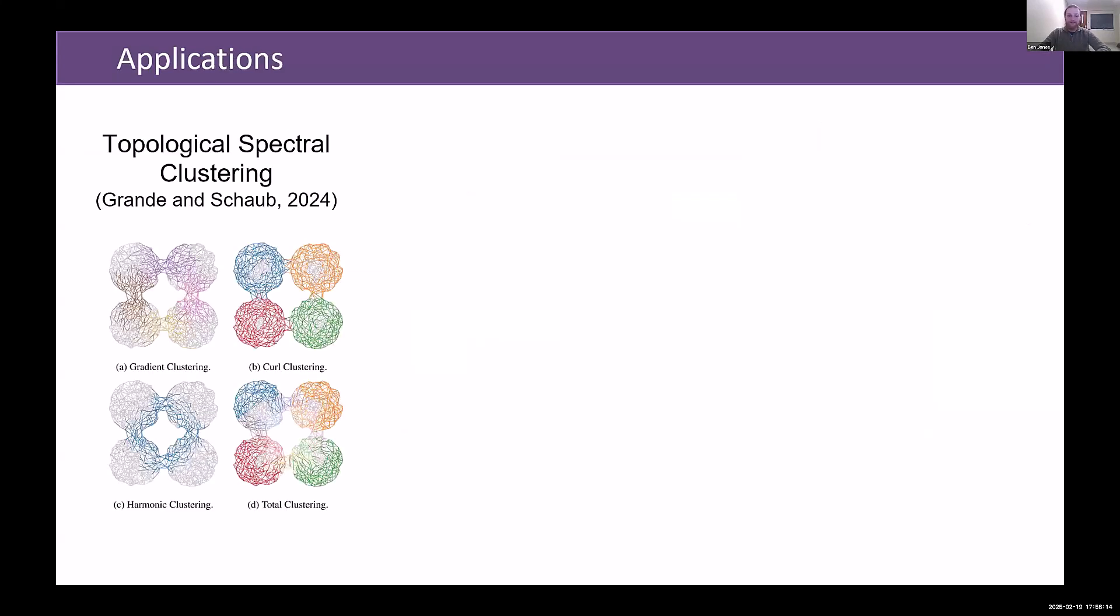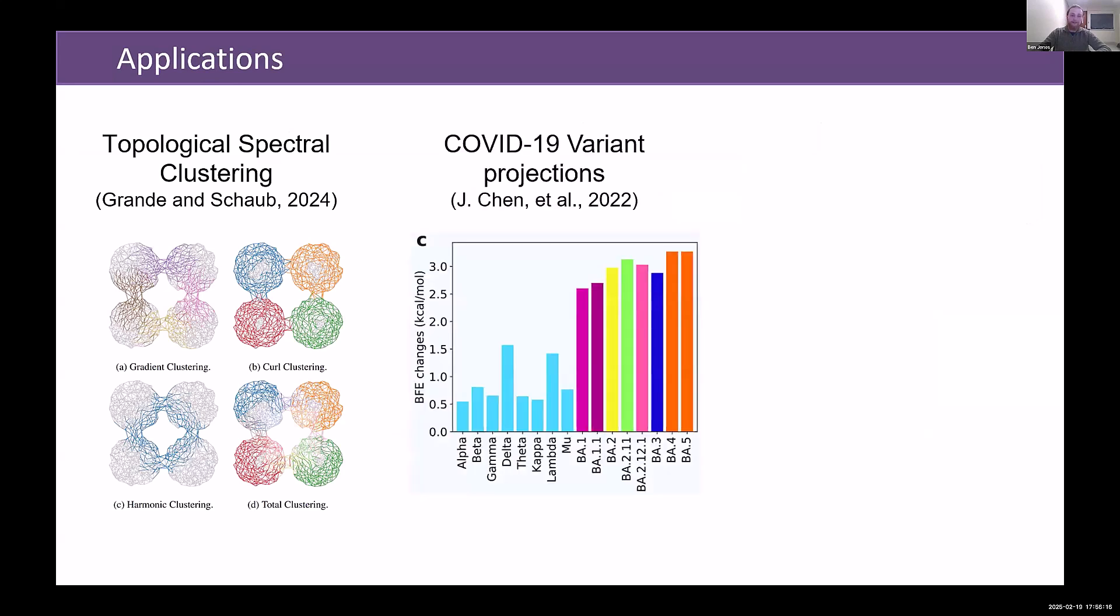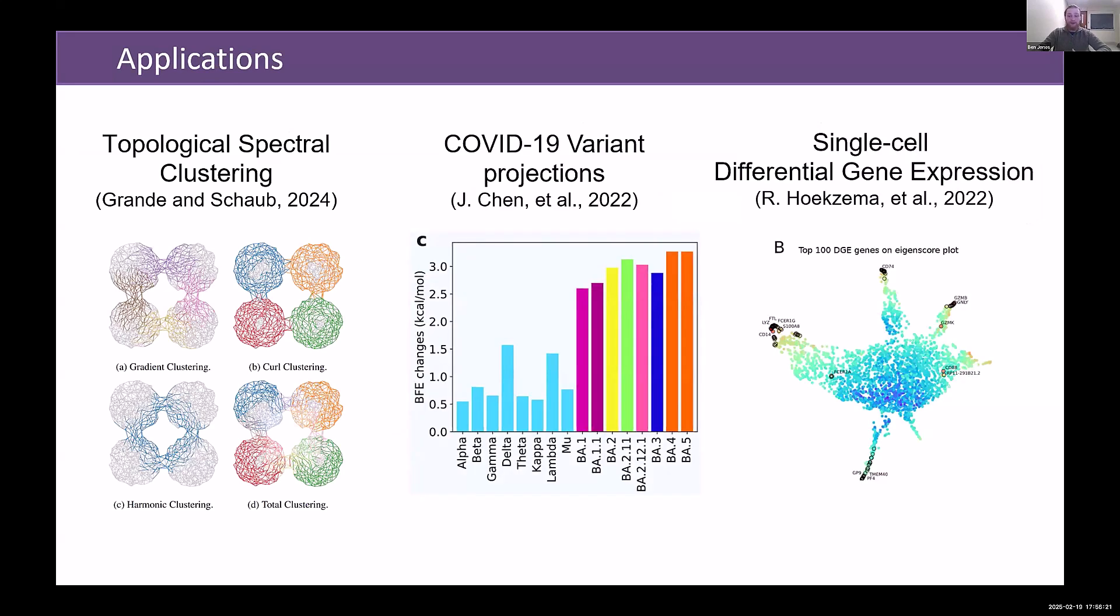This has been used in a variety of applications. One of those is topological spectral clustering. Another has been used to predict molecular properties, and it's also been used for single-cell differential gene expression. So it's been applied to a variety of real-world data and has had some interesting results.